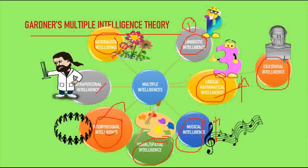Existential intelligence was included later in Gardner's theory. These people ponder deep questions that are beyond sensory data — such as what is human existence, what is the meaning of one's life, why we are here, and why we die. They tend to see the big picture of life and the truth of life. Cosmologists and philosophers have this type of intelligence.